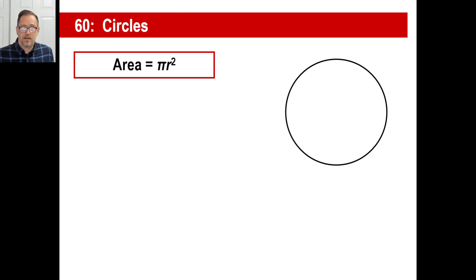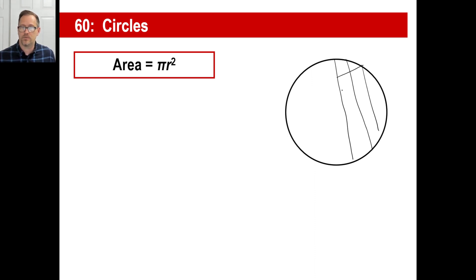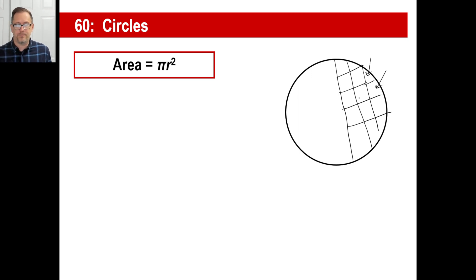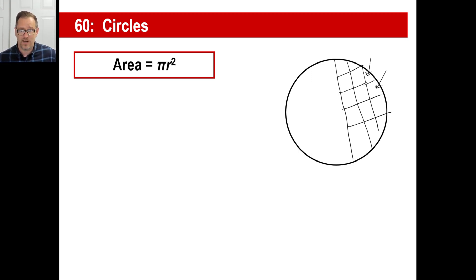Don't forget what area means — it's the number of squares inside the circle. You can't easily count them by hand because the squares along the edge are partial. But it's a very handy formula. To find the area, it's pi times the radius squared — not twice the radius, but the radius squared.